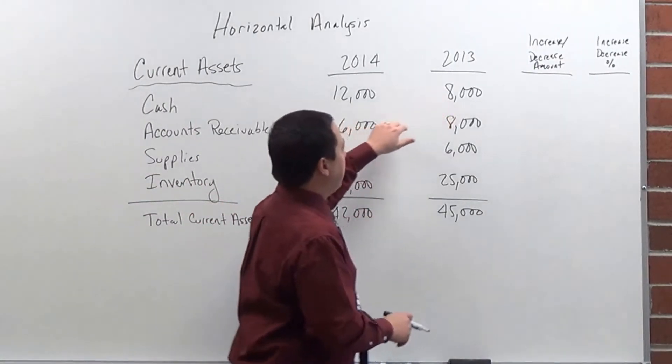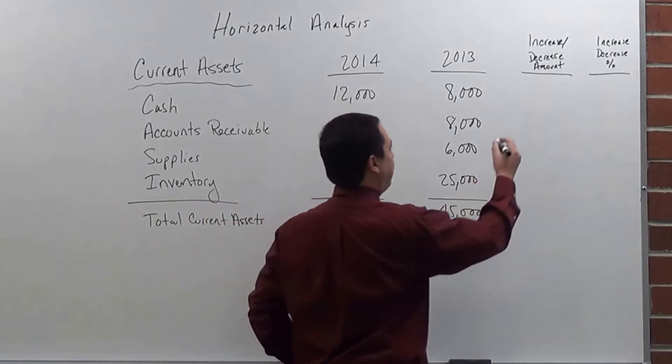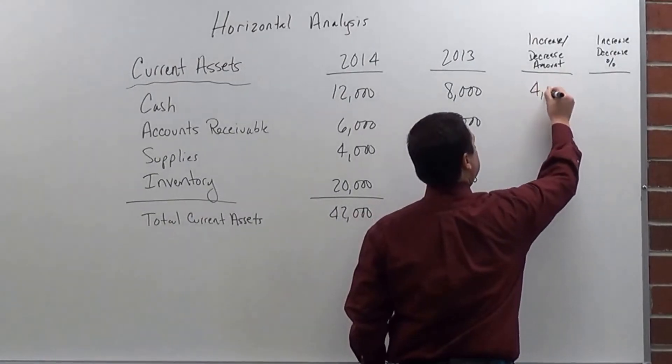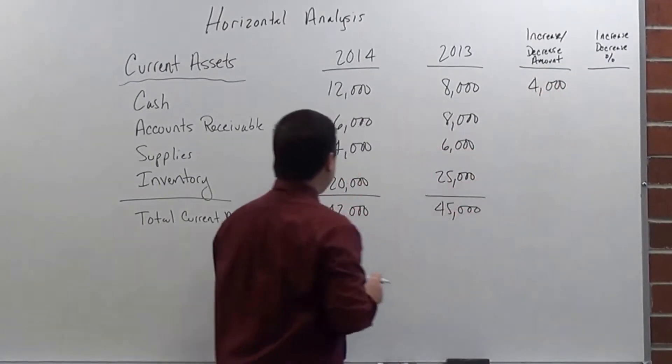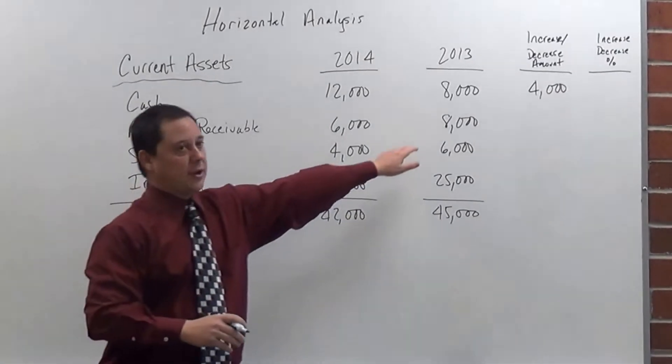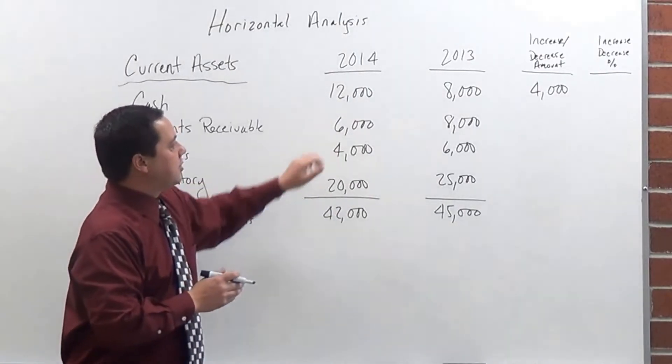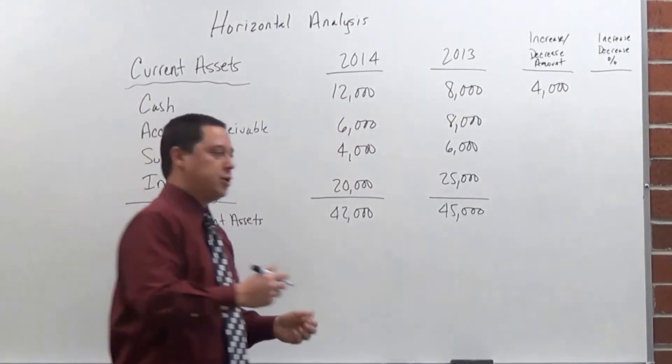So if we look here in 2013, we had a change from $8,000 to $12,000 in 2014. So we had a $4,000 increase. And then for my accounts receivable, as you can see here, we had an $8,000 balance in 2013 and then went to a $6,000 balance in 2014, so we dropped $2,000.